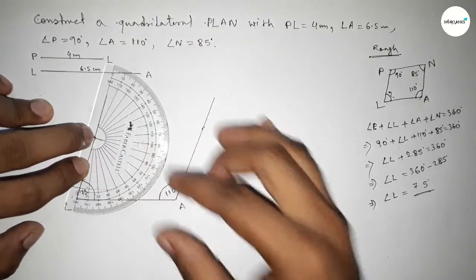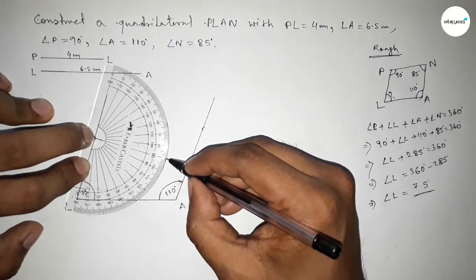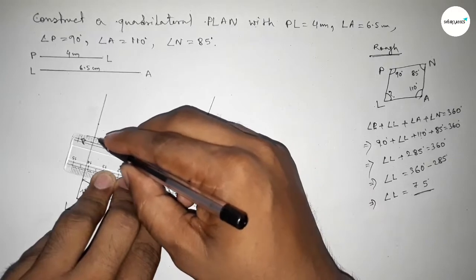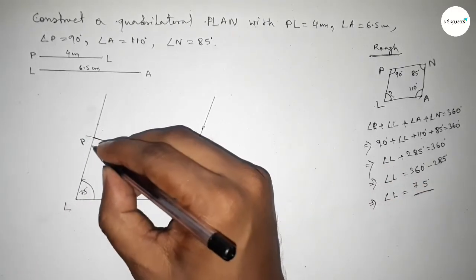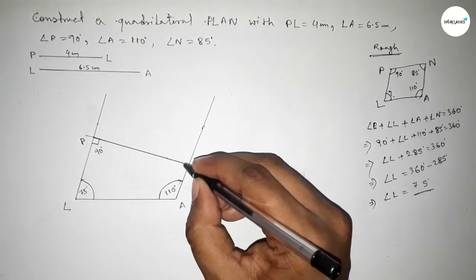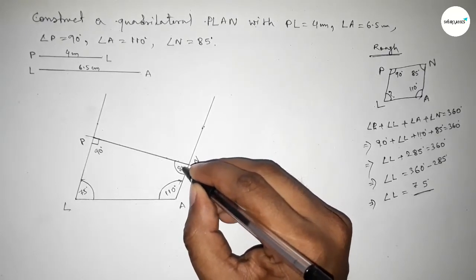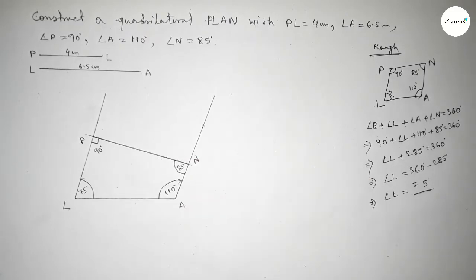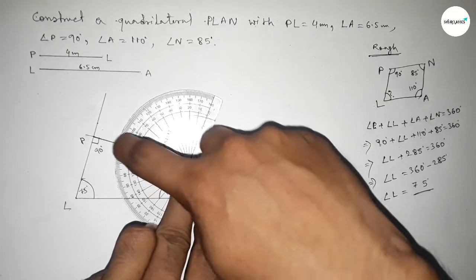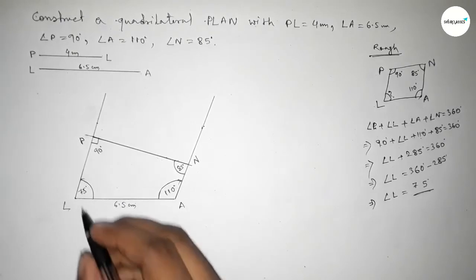Now we have to draw a 90 degree angle at point P using a protractor. So this is 90 degrees — marking the 90 degree angle and joining the line to get angle P equal to 90 degrees. Both lines meet at point N, and the angle at N is given as 85 degrees. Now checking this angle to verify whether it is 85 degrees or not.